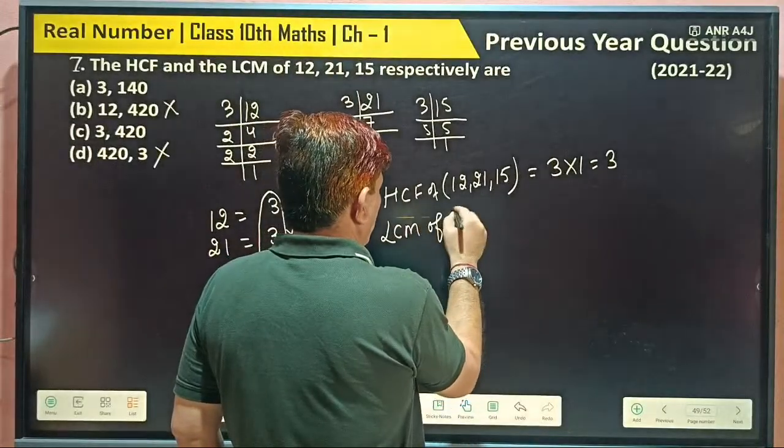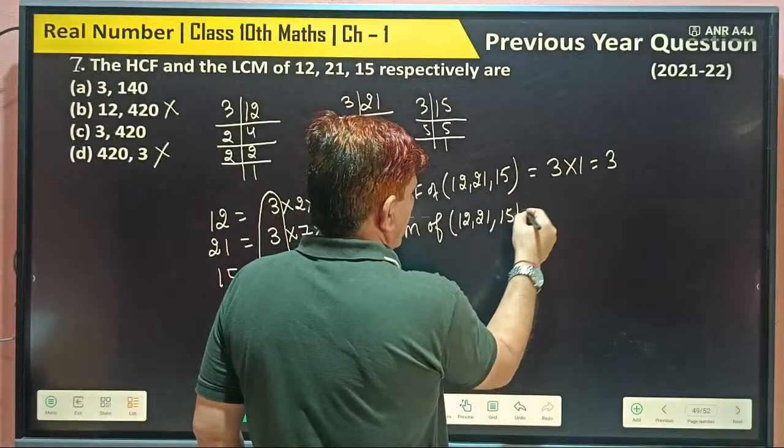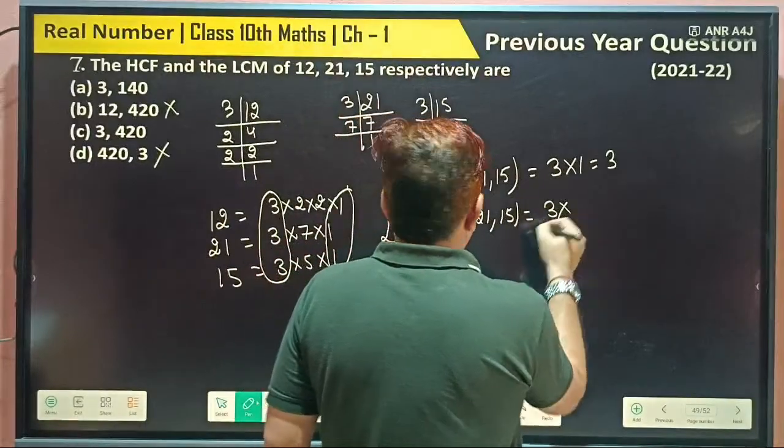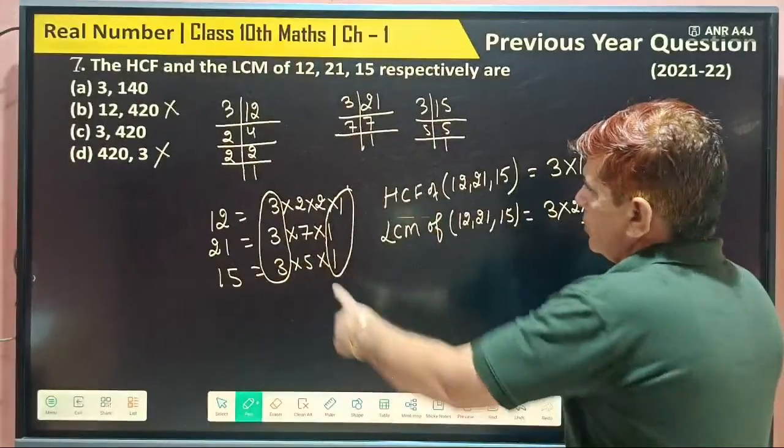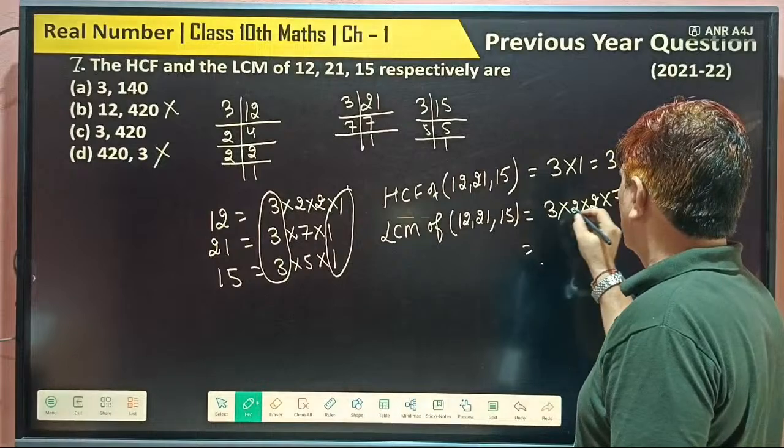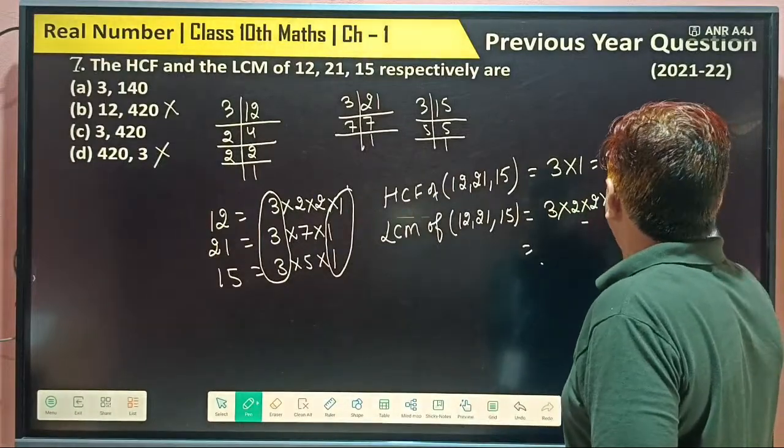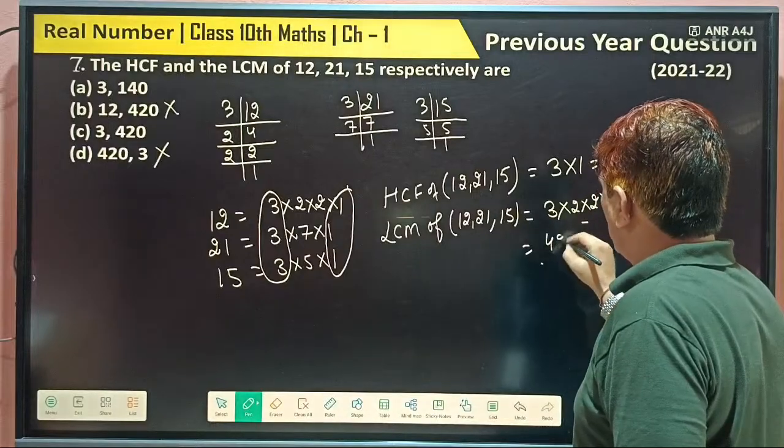LCM of 12, 21, 15: their HCF into 2, into 2, into 7, into 5. 3, 2's are 6, 6, 2's are 12, 12, 5's are 60, into 7, 420.